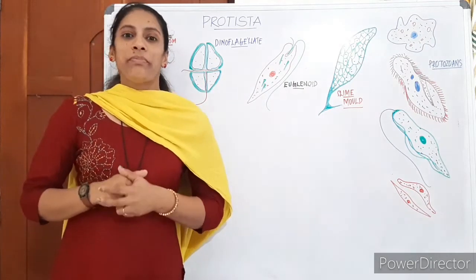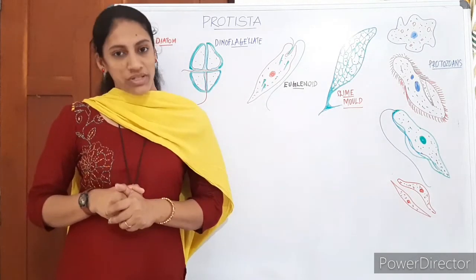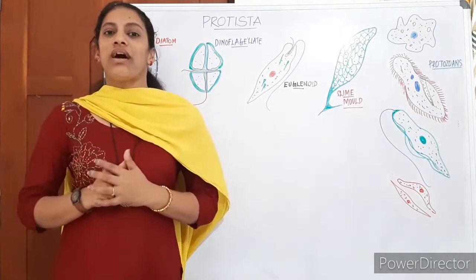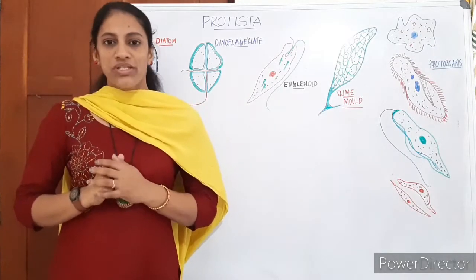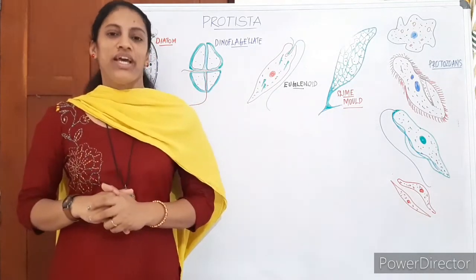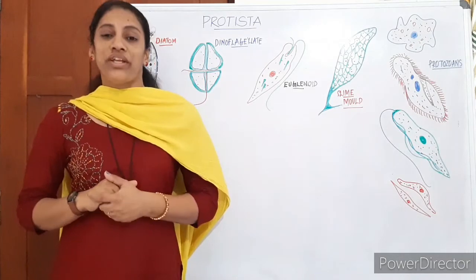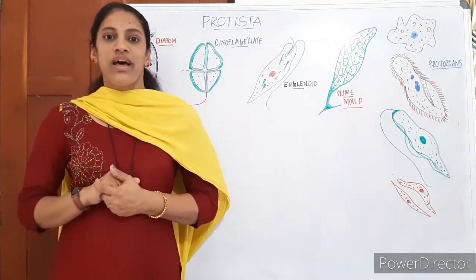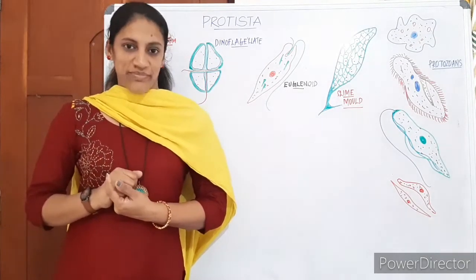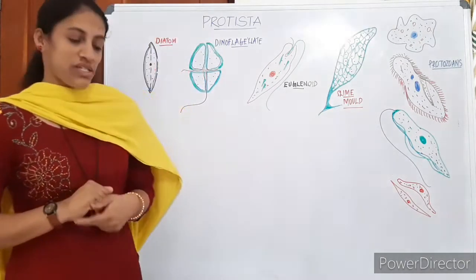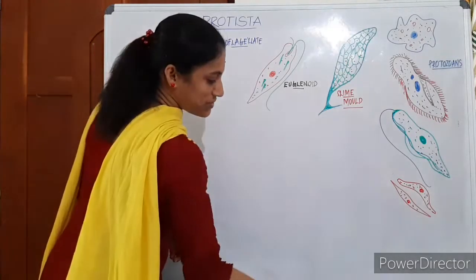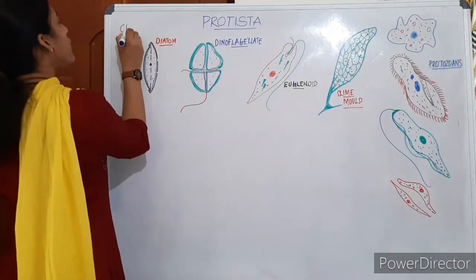Most of these members are aquatic and also seen in terrestrial habitats, and can even inhabit our body as parasites. Some members are photosynthetic, meaning these members are seen almost everywhere. The kingdom Protista consists of major groups: Chrysophytes, Dinoflagellates, Euglenoids, Slime molds, and Protozoans.